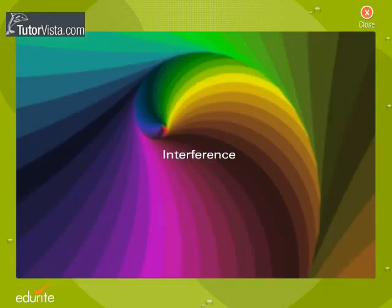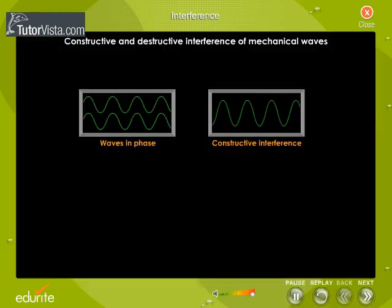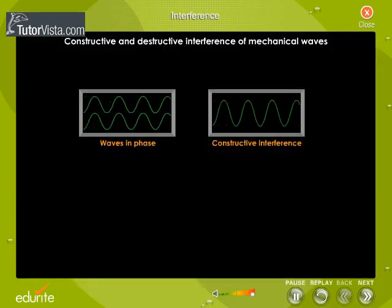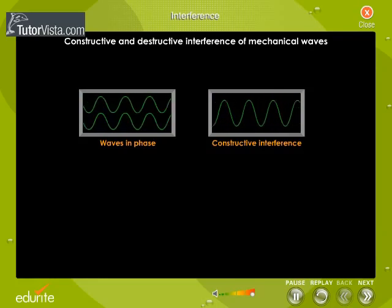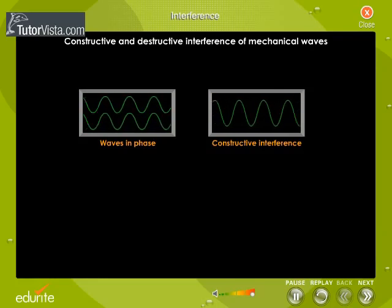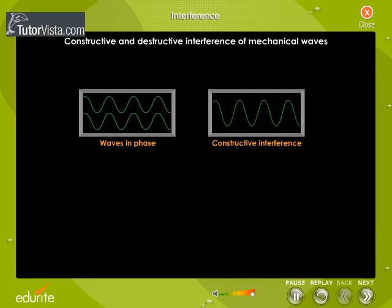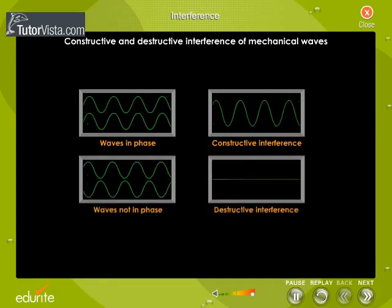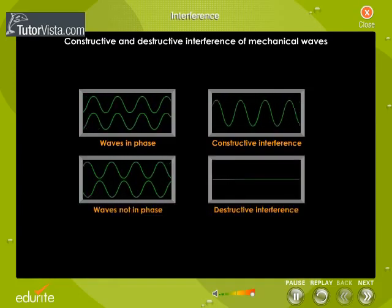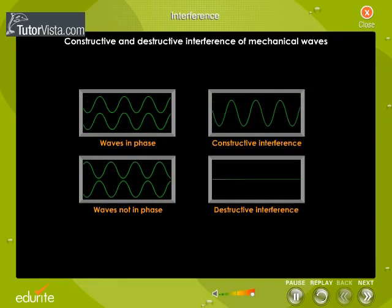Interference. We know that two mechanical waves of the same frequency can interfere constructively if the peaks of these waves are travelling in phase, and destructively interfere if the waves are not in phase.